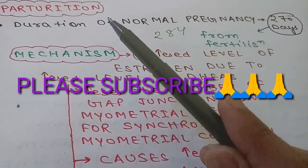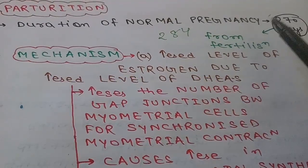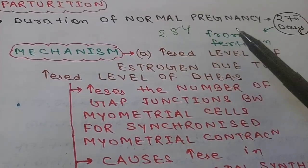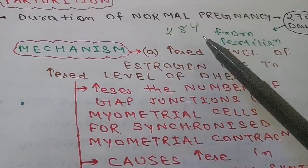Hello friends, we are going to discuss parturition. The normal duration of pregnancy is 270 days if we are counting from the day of fertilization, and if we count from the first day of the menstrual cycle, then the duration of normal pregnancy is 284 days.